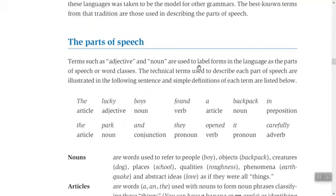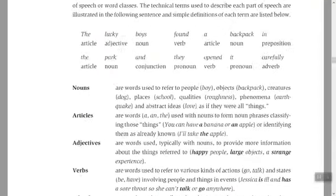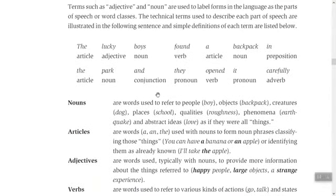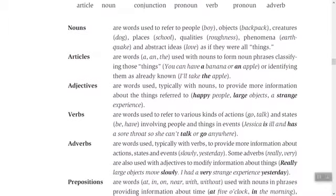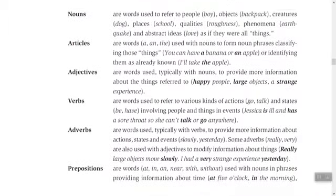We can see all the parts of speech illustrated in one sentence: 'The lucky boys found a backpack in the park and they opened it carefully.' Here: 'the' is an article, 'lucky' is an adjective, 'boys' is a noun, 'found' is a verb, 'a' is an article, 'backpack' is a noun, 'in' is a preposition, 'the' is an article, 'park' is a noun, 'and' is a conjunction, 'they' is a pronoun, 'opened' is a verb, 'it' is a pronoun, and 'carefully' is an adverb.